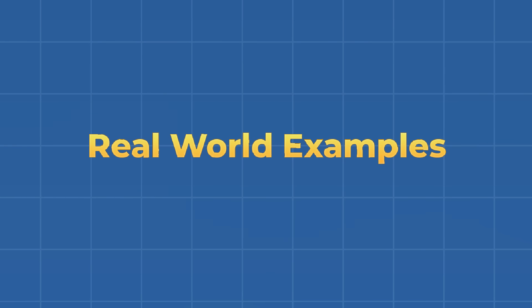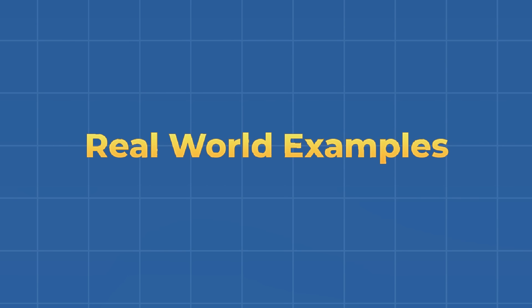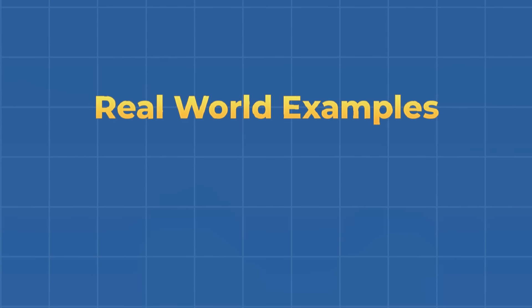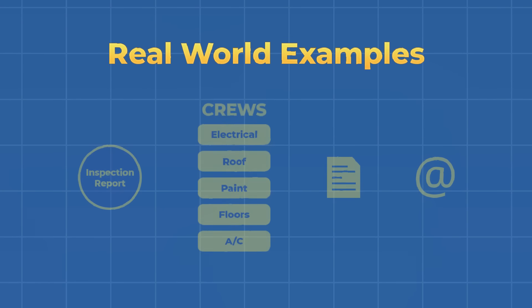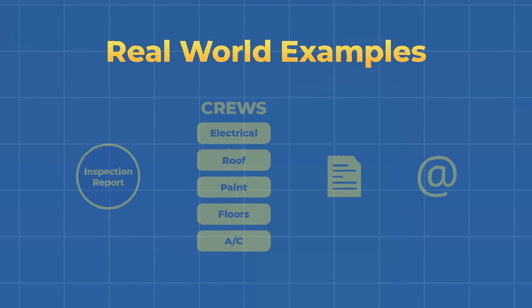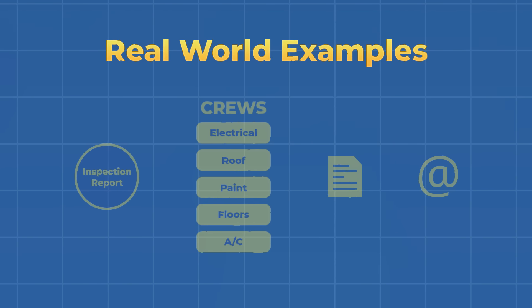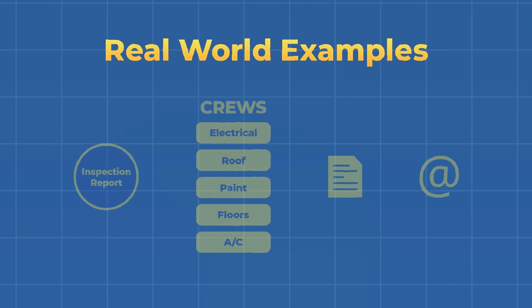Let's quit talking about hypotheticals and dive into two real world examples where you would want to use Crew AI and RAG to automate workflows. For the first real world use case, we could build a crew to help real estate investors speed up the process for getting quotes on a property they want to invest in. When a real estate investor goes to buy a house, they need to first get an inspection report that lists out all the things wrong with the property.